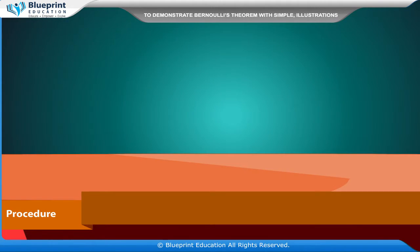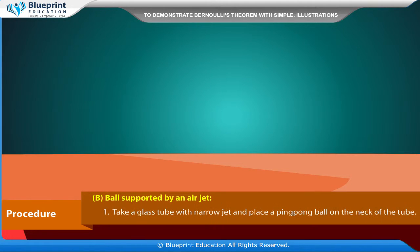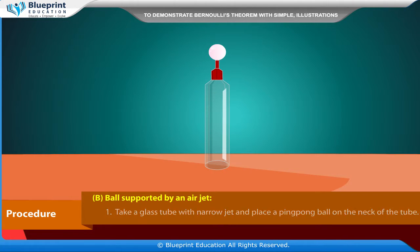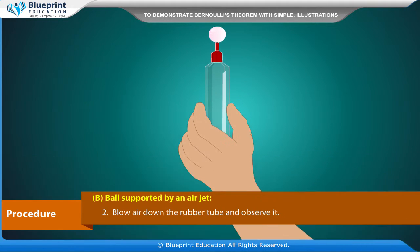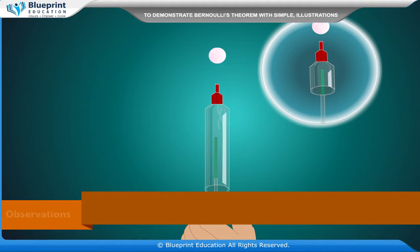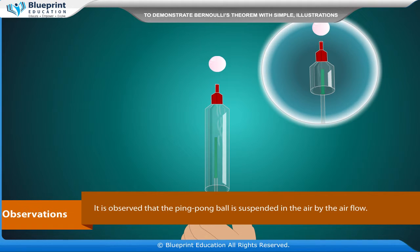The second situation is: ball supported by an air jet. Take a glass tube with narrow jet and place a ping pong ball on the neck of the tube. Blow air down the rubber tube and observe it. Observation: it is observed that the ping pong ball is suspended in the air by the air flow.